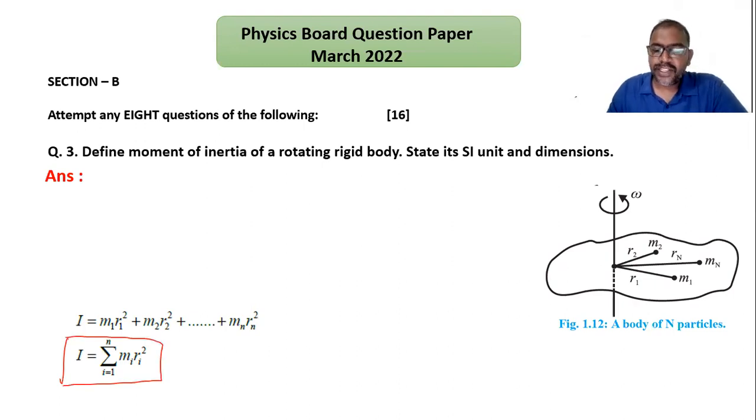We consider one rigid body which is rotating about an axis passing through point O. This body is made from N number of particles: particle 1 having mass m1, particle 2 having mass m2, particle 3 having mass m3, and so on. The nth particle has mass mn, with distances r1, r2, r3, rn respectively.